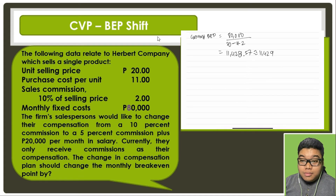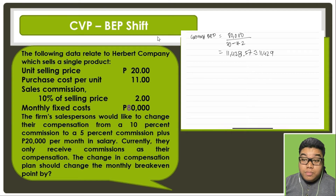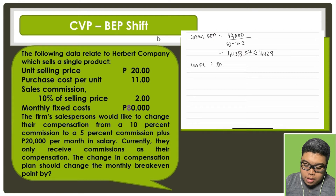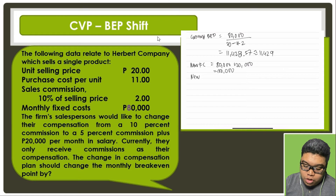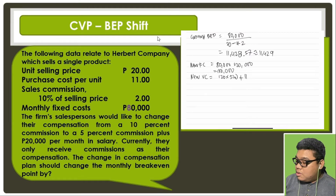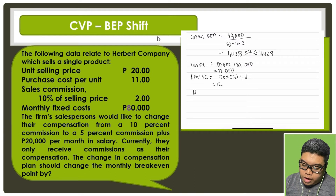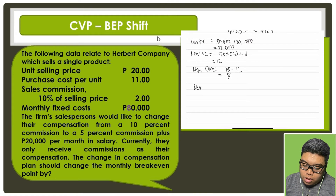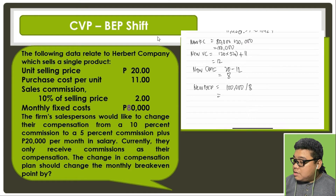If the plan changes, the new fixed cost would be 80,000 plus 20,000. The new variable cost would be the selling price of 20 multiplied by 5% plus 11. So 20 times 0.05 is 1, plus 11 gives us a new variable cost of 12. The new contribution margin would be 20 minus 12, which is 8. To compute for the new break-even point, we have 100,000 divided by 8.